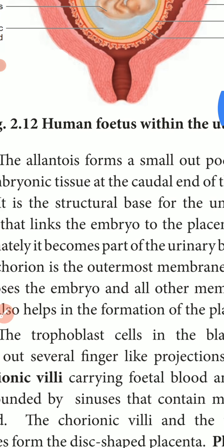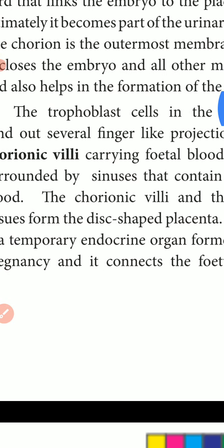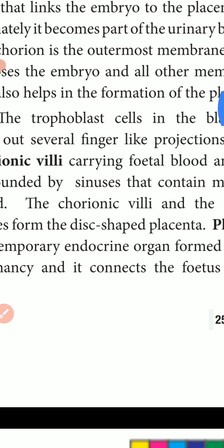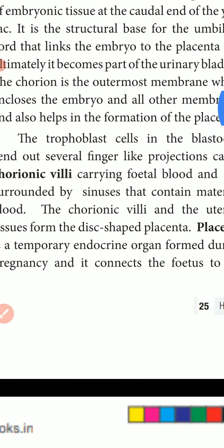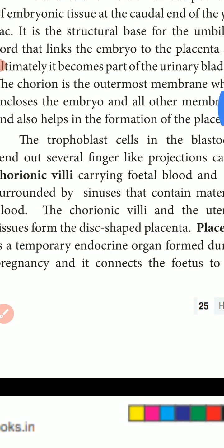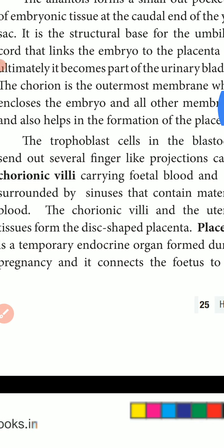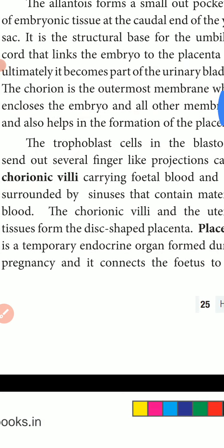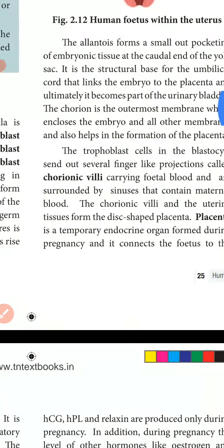The embryonic heart develops during the fourth week of pregnancy and circulates blood through the umbilical cord and placenta, as well as through its own tissues.